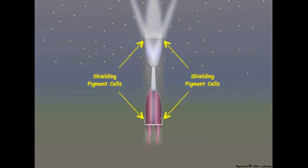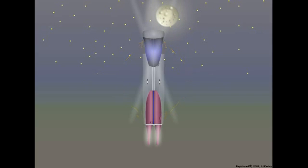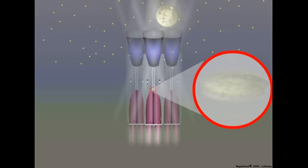However, as night approaches and the intensity of light decreases, the shielding pigments of scotopic ommatidia contract upward toward the distal end of the secondary pigment cells. Distal contraction of the shielding pigments opens the basal portion of the pigment cells so that light entering the dioptric apparatus of one ommatidium can pass through and strike the rhabdomes in adjacent ommatidia. In this manner, scotopic ommatidia interact cooperatively to form multiple superimposed images on the rhabdomes of neighboring ommatidia.